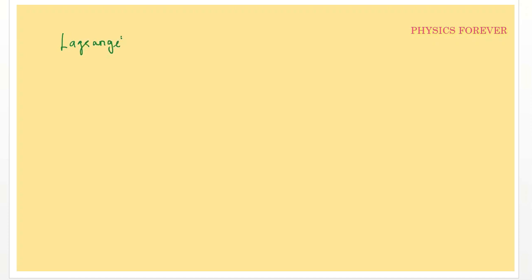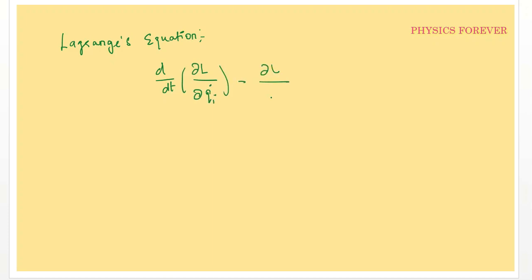Next, the Lagrangian equation of motion - everyone should be familiar with this. The most important equation is: d/dt of (partial L / partial q_i-dot) minus (partial L / partial q_i) equals zero, for i equals 1, 2, up to n.